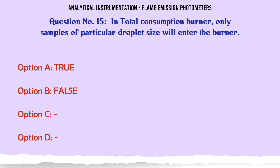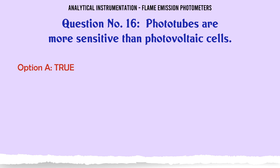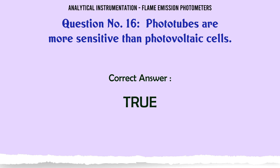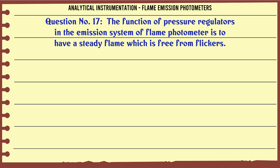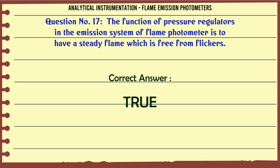In total consumption burner, only samples of a particular droplet size will enter the burner. True or False? The correct answer is: False. Phototubes are more sensitive than photovoltaic cells. True or False? The correct answer is: True. The function of pressure regulators in the emission system of a flame photometer is to have a steady flame which is free from flickers. True or False? The correct answer is: True.